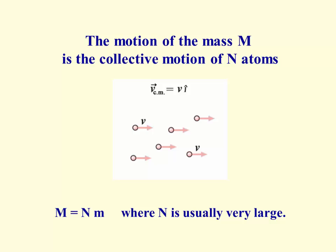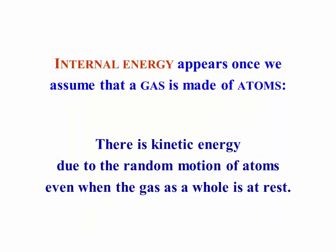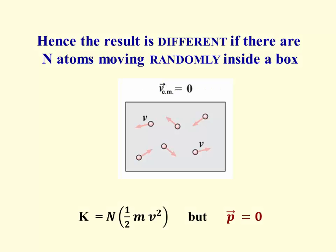The total mass M equals n times the little mass m. Of course, normally n is extremely large to the point where we don't even notice there are atoms there. The reason we have to have internal energy is if we've actually got a gas rather than a solid, and that gas is made of atoms, those atoms in the gas are free to move around. So there's kinetic energy due to the random motion of those atoms, even when the gas as a whole is at rest.